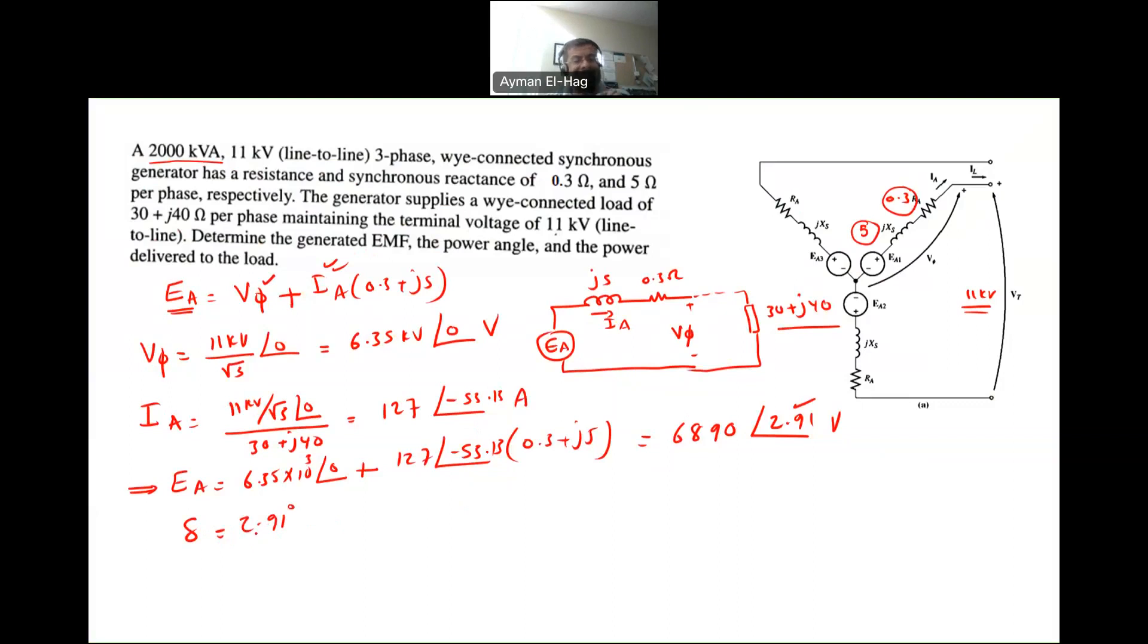Finally, what is the power that is delivered to the load? How much P I am delivering? So power, the general formula, equal to 3, V phase, IA, cosine theta. Cosine, the angle of V phase and IA, which is equal to 3. The V phase is the 6.35 times 10 to the power of 3. The current is the 127. The angle, cosine of, the angle of theta V phase is equal to 0 minus the angle of IA, I already found it, which is minus 53.13. And this will give me 1451.9 kilowatt.